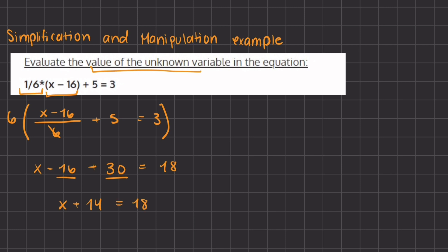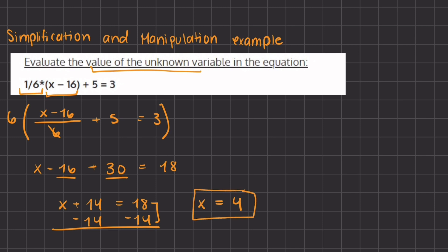In order to find the value of x, we want to isolate it by getting rid of this constant. So we subtract 14 on both sides, and we are left with x equals 18 minus 14, which gives us 4. The final value of x is 4. We solved this problem using both simplification and manipulation methods.